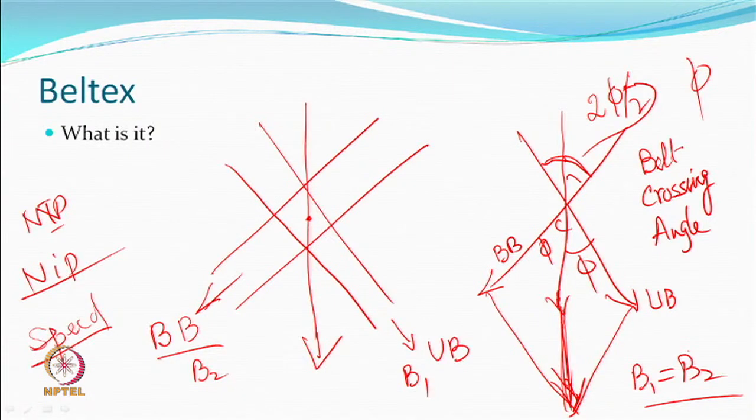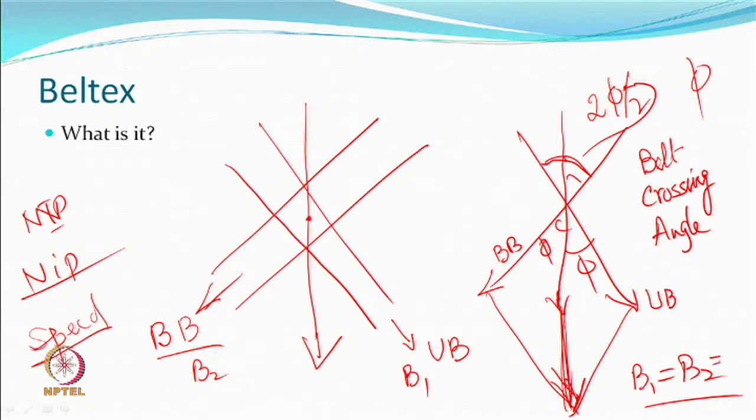There are two parameters: one is the speed of the belt, B, and the other is the belt crossing angle, which can also be changed. If you change the belt crossing angle, the component of the frictional force magnitude will also change. And of course, if you change B, this magnitude will also change. So these are the two parameters you now have.